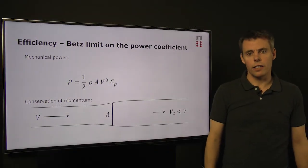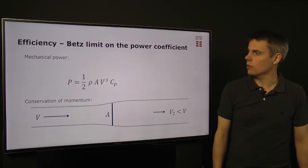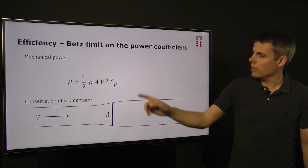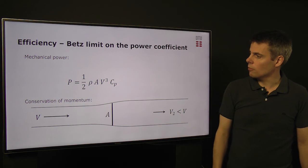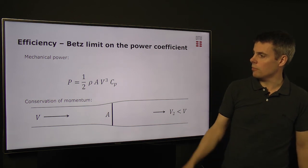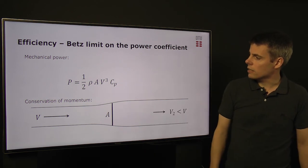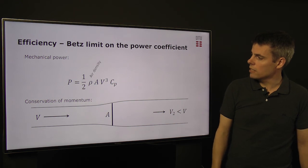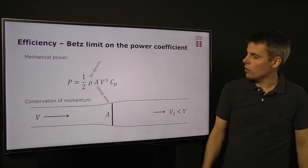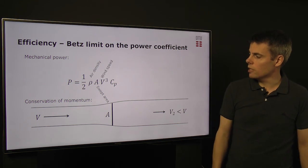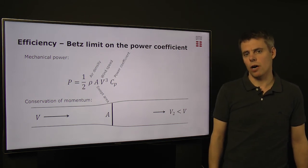First, we'll have a look at the efficiencies of the different concepts. The mechanical power from any concept can be calculated from the air density, the swept area from which the energy is extracted of the wind, the wind speed itself cubed, and the power coefficient.